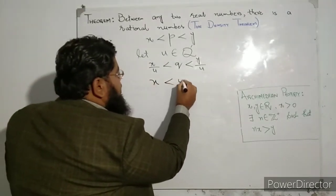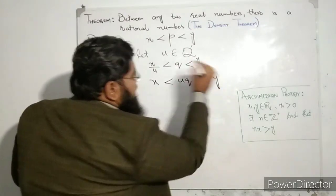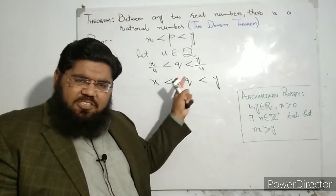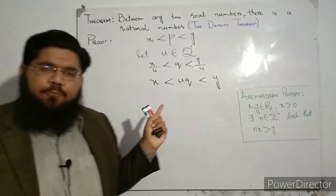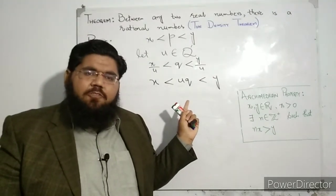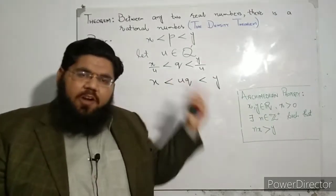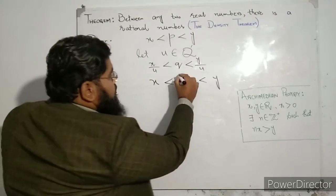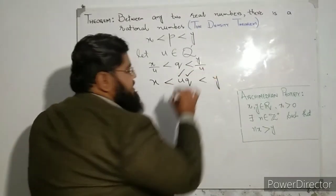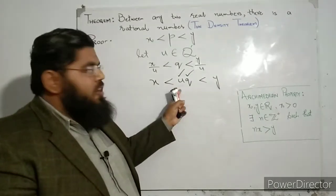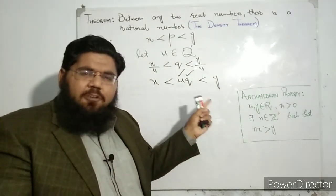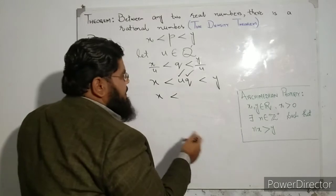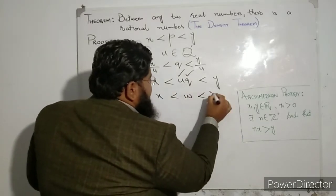So what is the quantity uq? Here u is an irrational number and q is a rational number. As shown in the first video in this playlist — which proves that the product of a rational and an irrational is irrational — their product uq is an irrational number. So we have x is less than w is less than y, where w equals uq is irrational. This proves that between any two real numbers there is an irrational number as well.